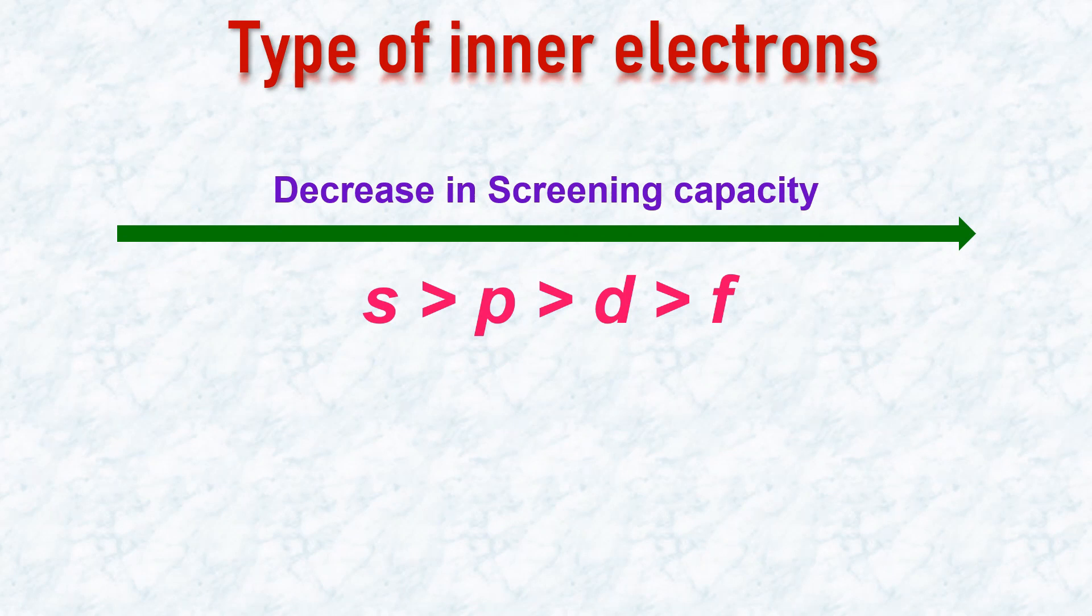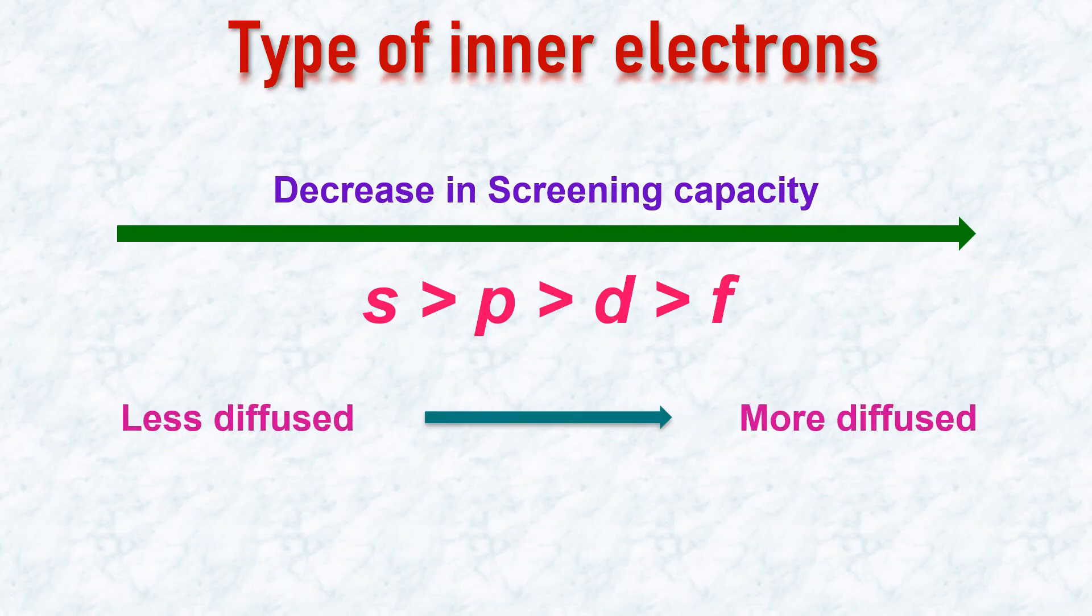For example, the S orbitals are less spread out in space when compared to the P orbitals. Therefore, the screening capacity of S orbitals is greater than that of P orbitals, which in turn can screen more effectively than the D orbitals. The orbitals with the least screening ability are the F orbitals as they are more diffused in space. Thus, the shielding capacity diminishes from S orbital to the F orbital as shown.